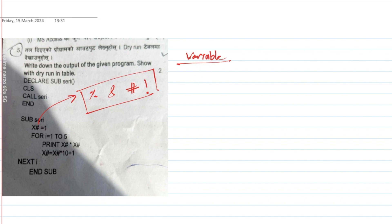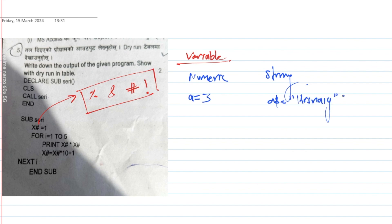This is a Numeric Variable and a String Variable. A Numeric Variable: a equals to 3. A dollar sign variable like a$ equals to 'Krishna' — that is a String Variable. The dollar sign indicates a String Variable, while the other is a Numeric Variable.